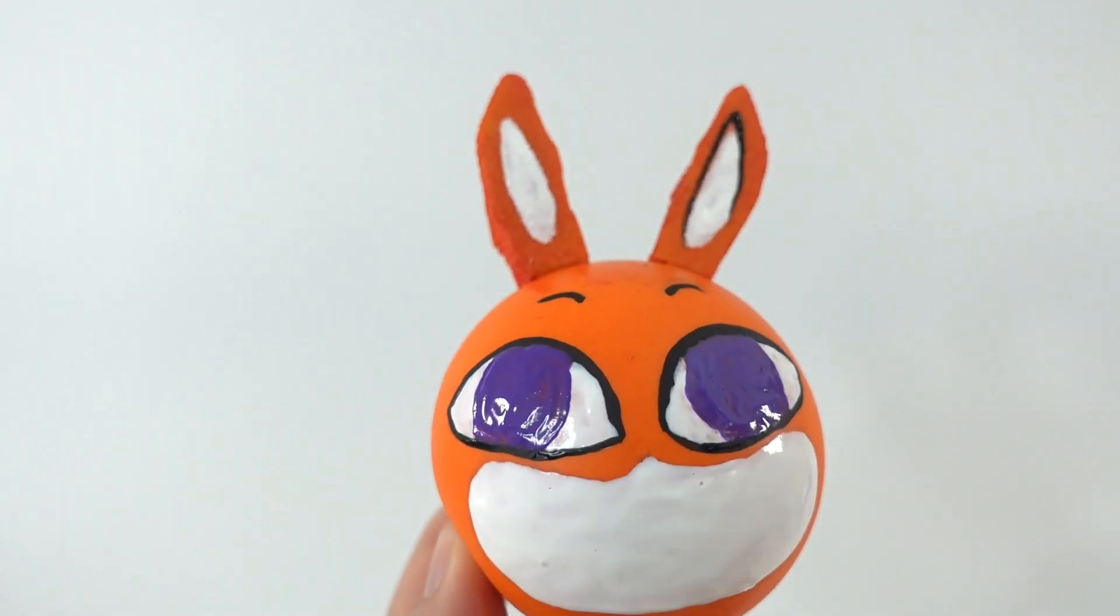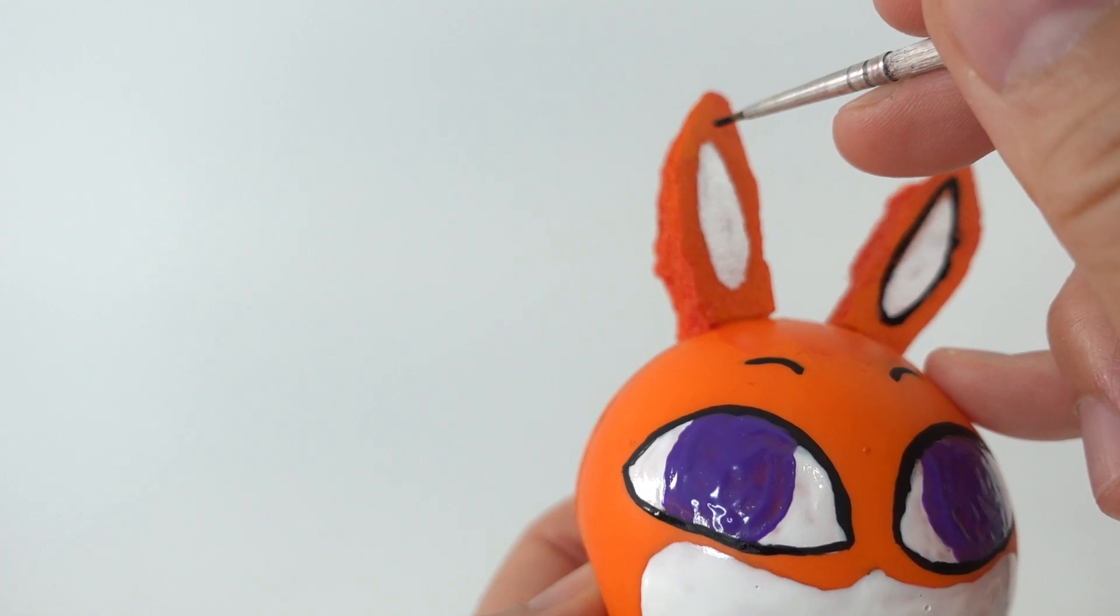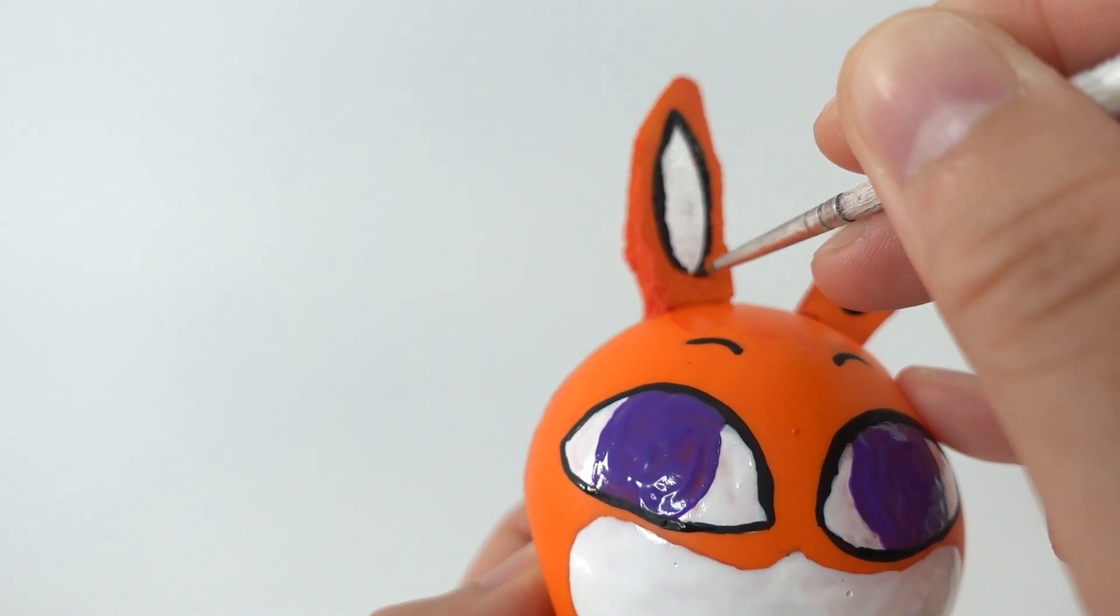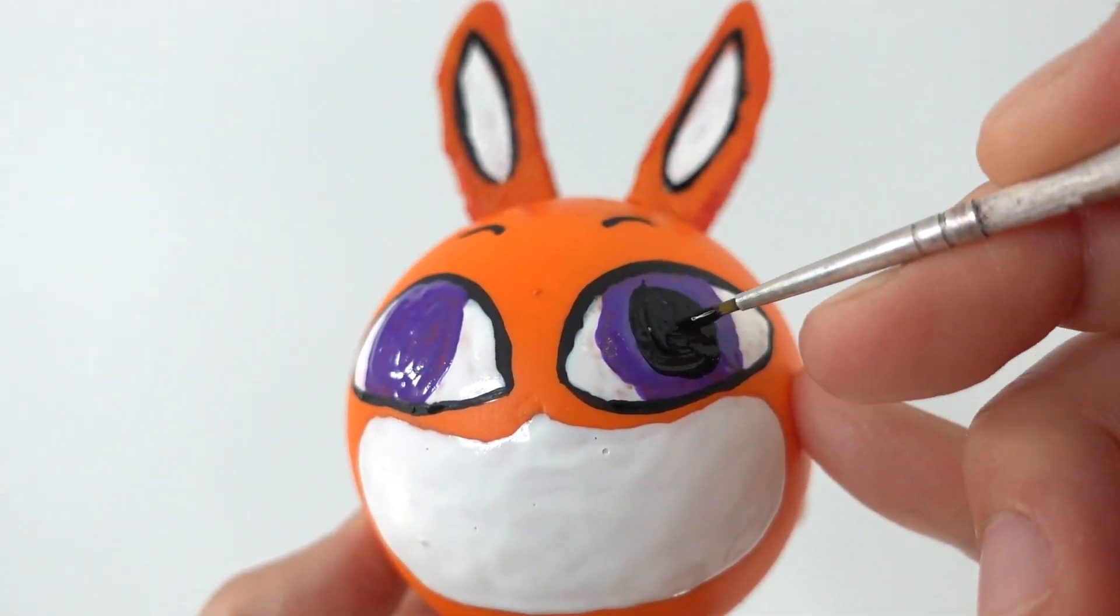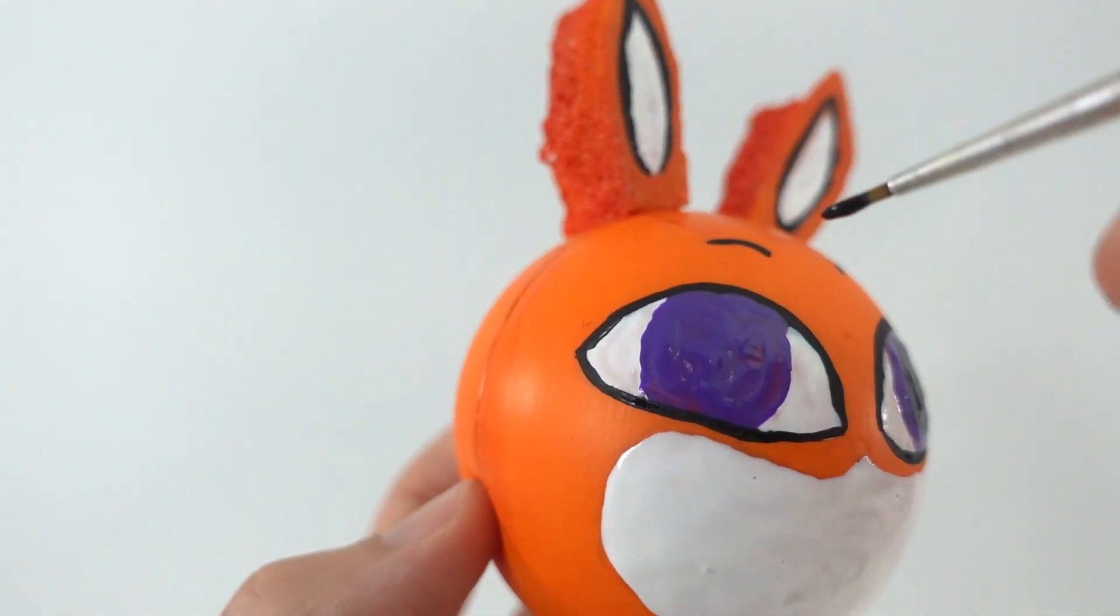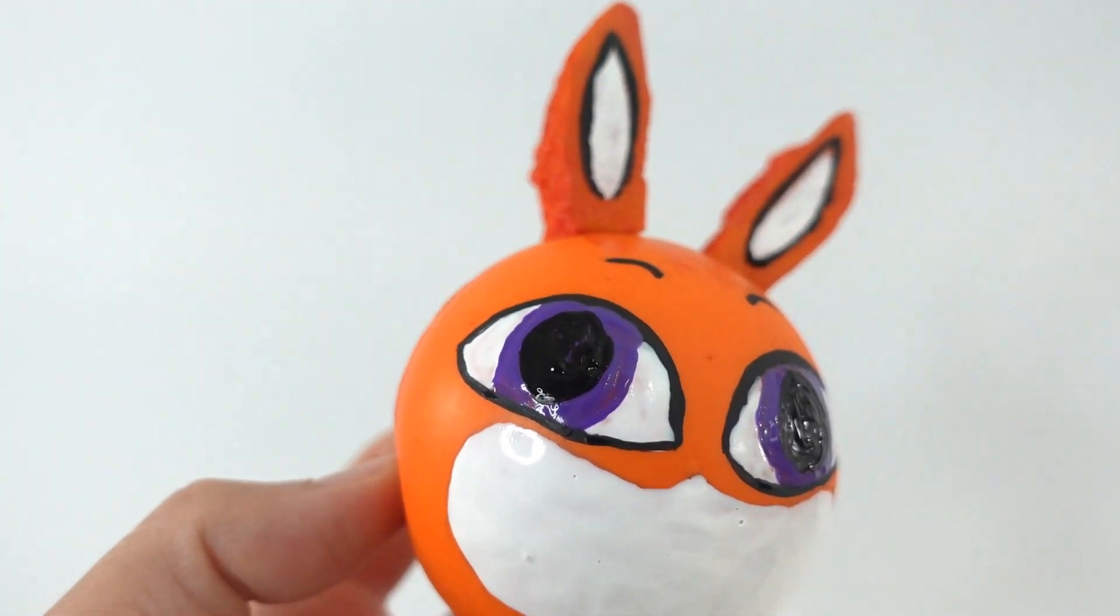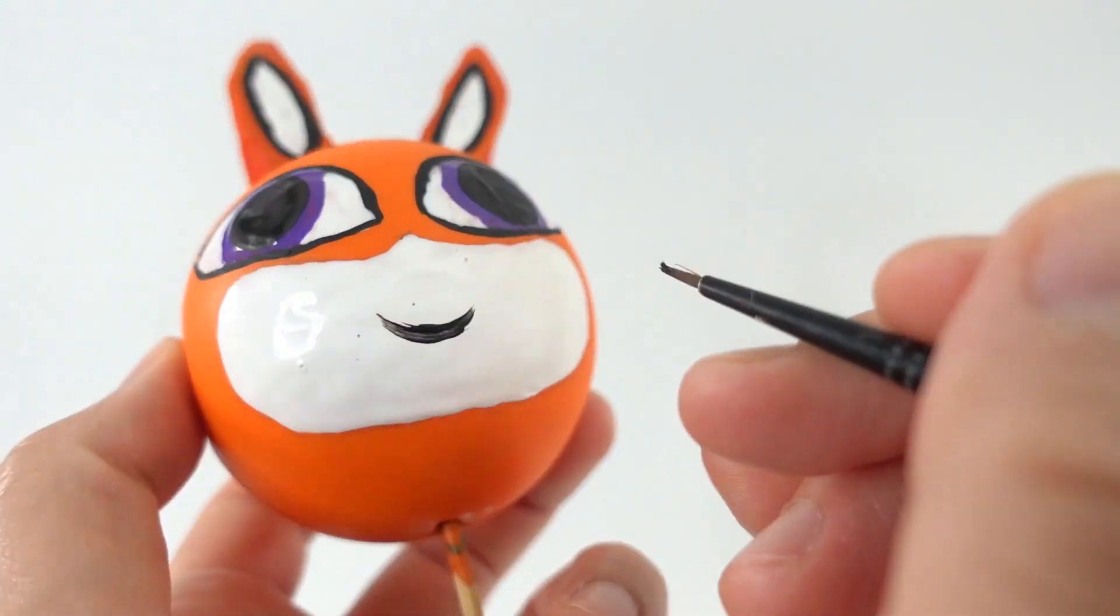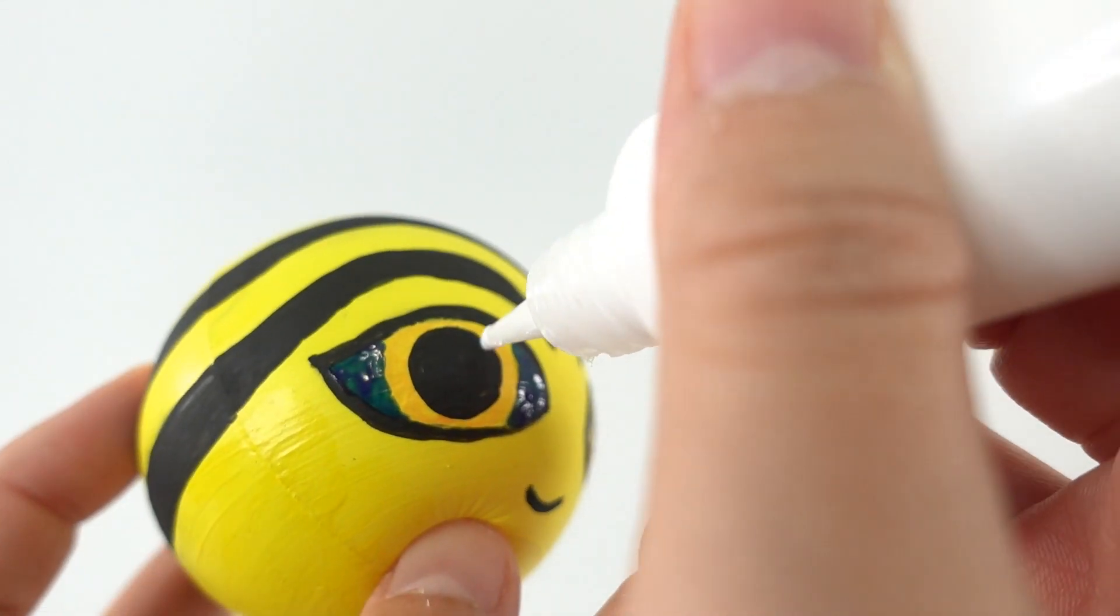Using black, we're going to outline the ears and fill in the pupils. Add the mouth. And finally, we're going to take the white and add some dots to both Trix and Pollen.